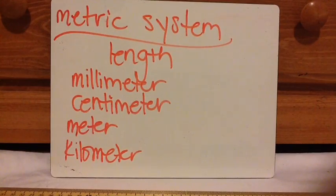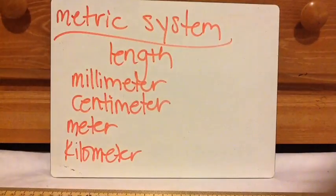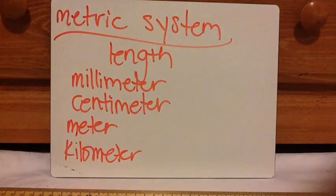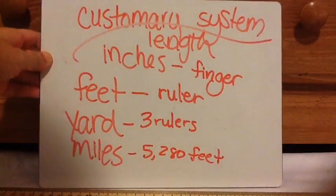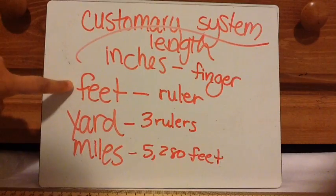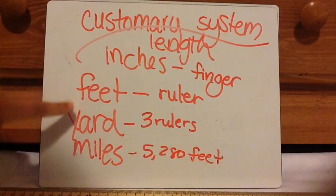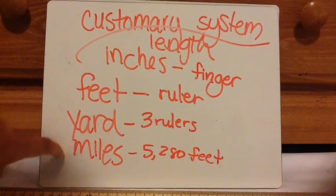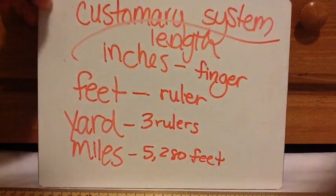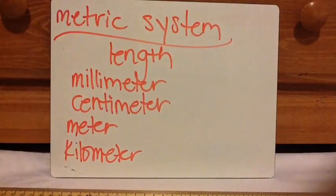In my other TEKS video about converting measurements, it's so easy because the numbers just work well together. Whereas with the customary system, 12 inches equal a foot, three feet equal a yard, and 5,280 feet equal a mile — so it's a little bit different.